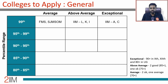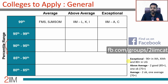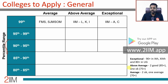We have categorized percentiles as different ranges, and we have also categorized academics into three levels: exceptional, above average, and average. Exceptional means 10th and 12th standard 90 plus and 80 plus in undergrad. Above average means two of the three criteria are good — say 85 plus — and one is okayish. Average means two are okayish and one is average, say 70 plus. This entire table is split across these three criteria and different percentile ranges.